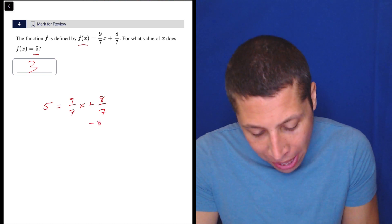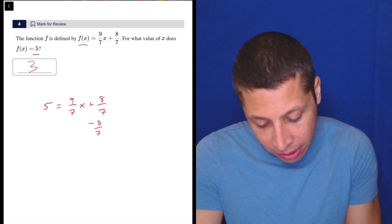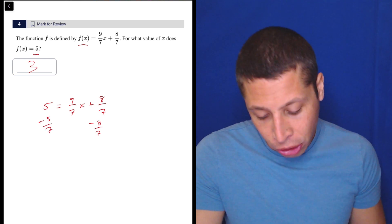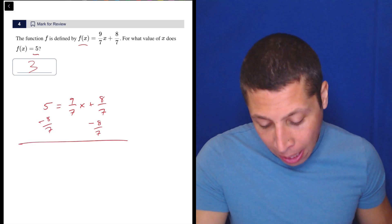So right away, we're off to a bad start. We've got to get rid of the 8/7. You could multiply everything by 7 just to clean it up a bit.